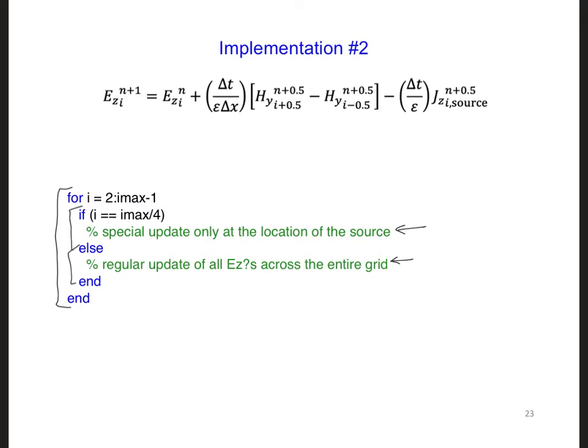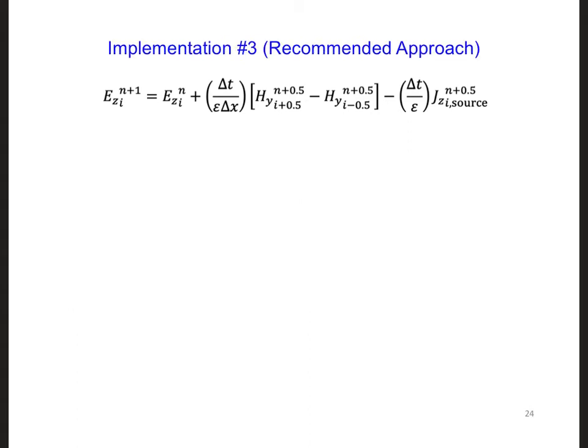Because the computer has to check whether two numbers, i and i max over 4, are equal to each other for all values of i and also at every single time-step.